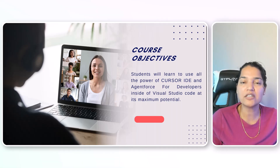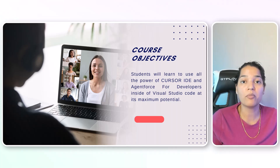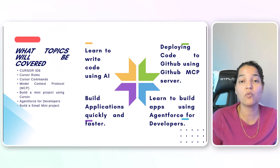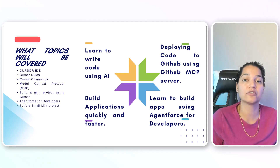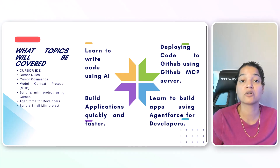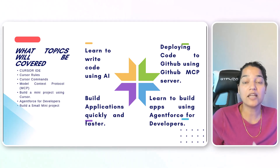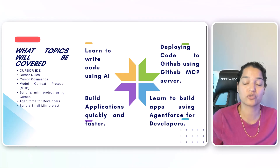The course is very modern and up to speed with the latest things going on in the AI world. The course is divided into two parts. The first part covers Cursor IDE — Cursor Rules, MCP, how to configure MCP servers, Cursor Commands, and we'll build a mini project using Cursor IDE. Then we'll talk about AgentForce for Developers, see what different features are available, and also build a mini project using AgentForce for Developers. So you're building two main projects, and through those projects you're learning to use both tools.